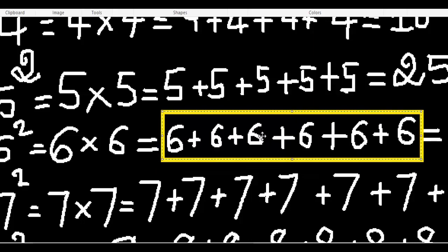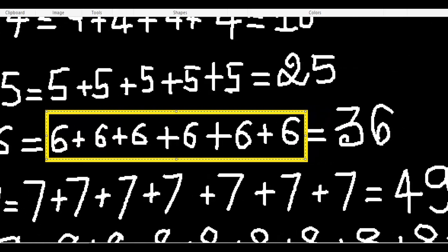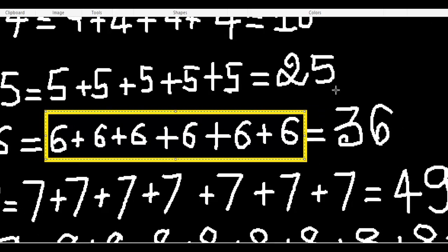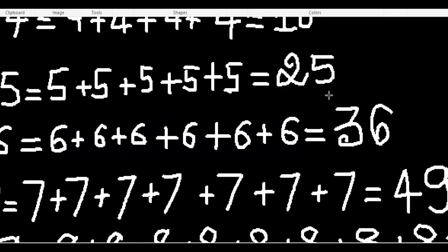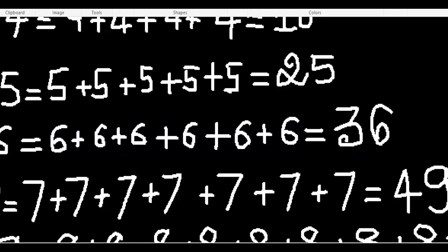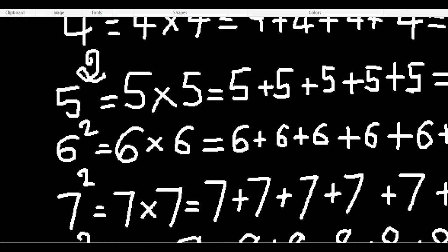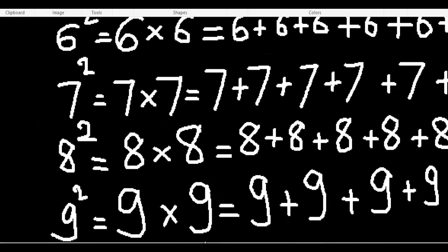Now six squared. Six times six means six plus six plus six plus six plus six plus six plus six plus six. That equals 36.